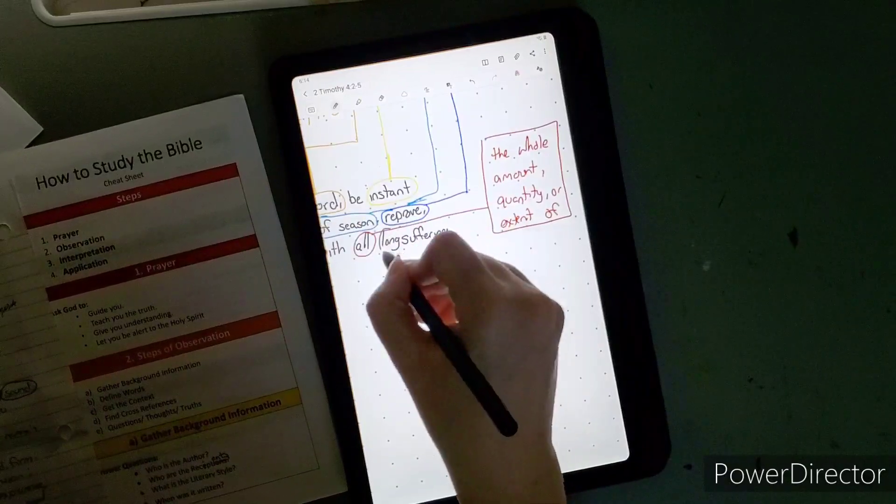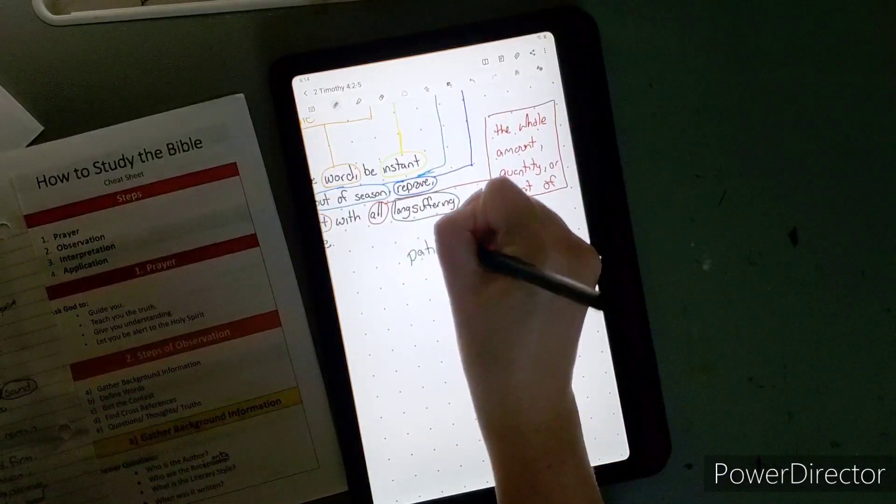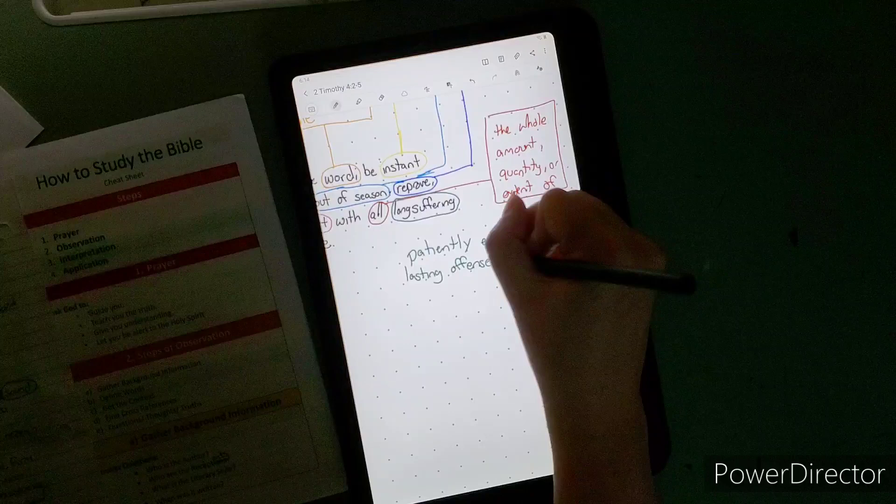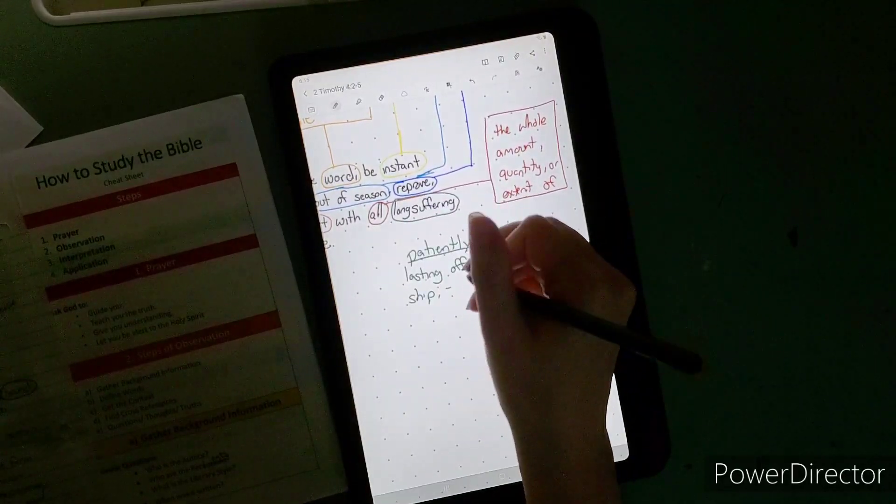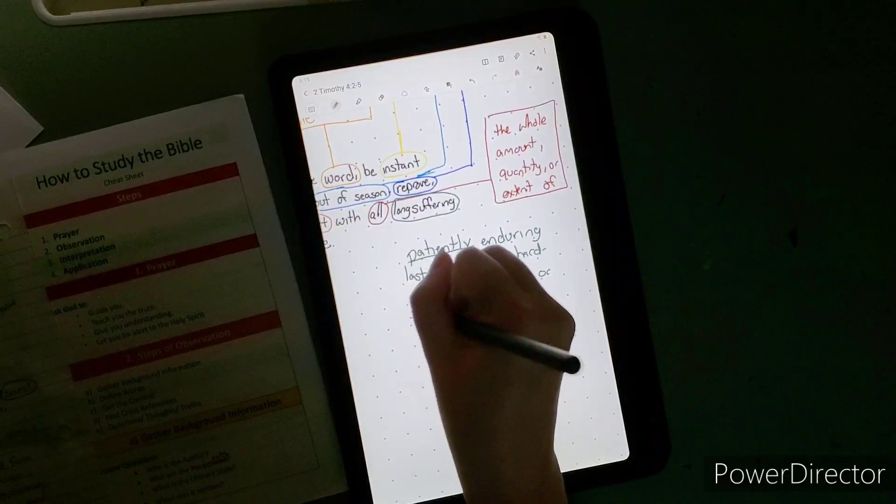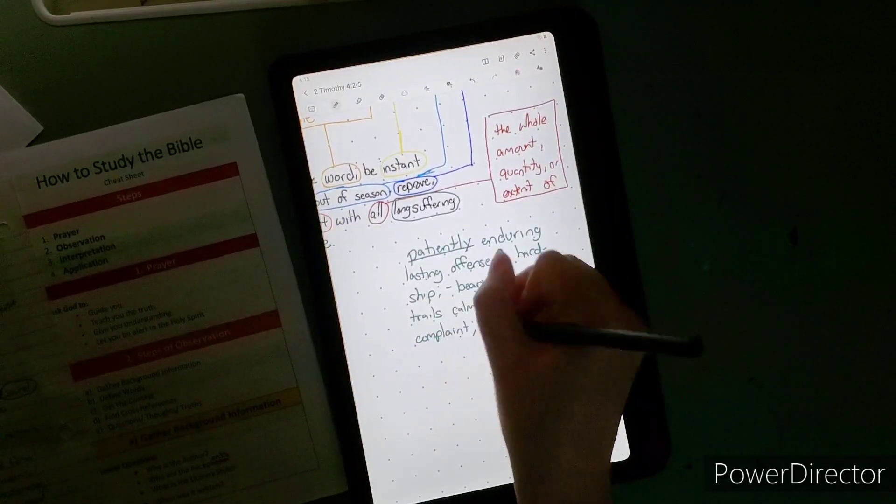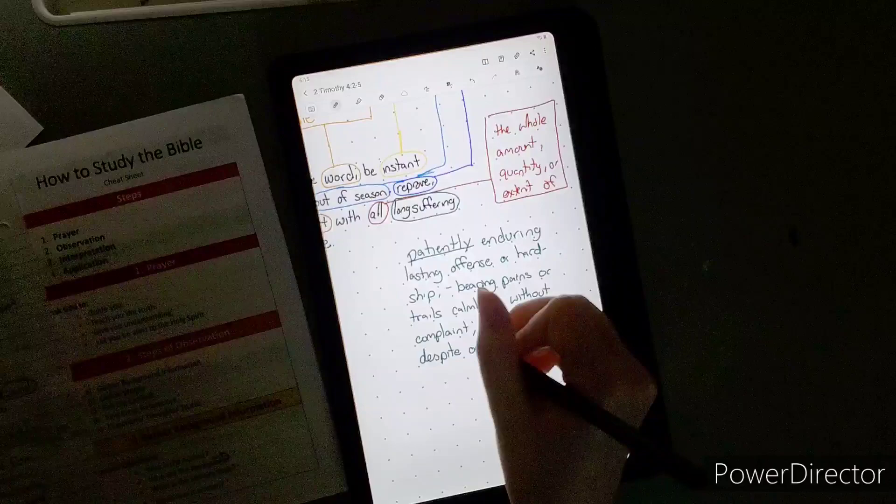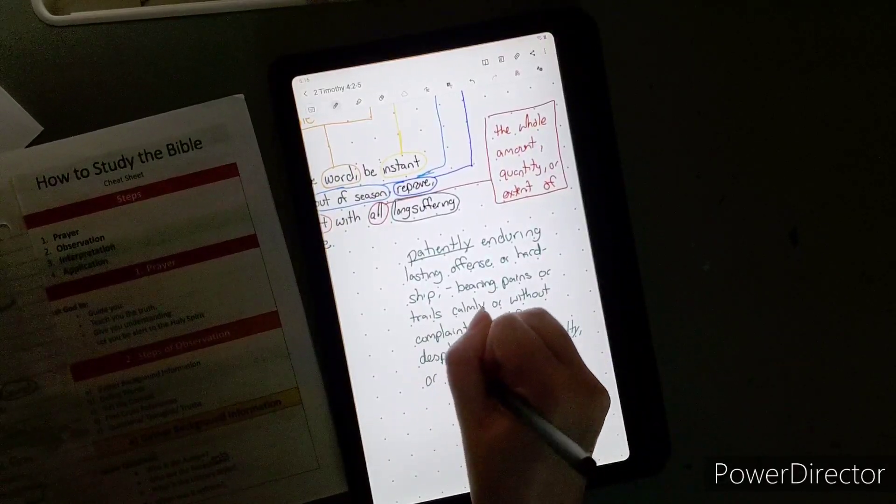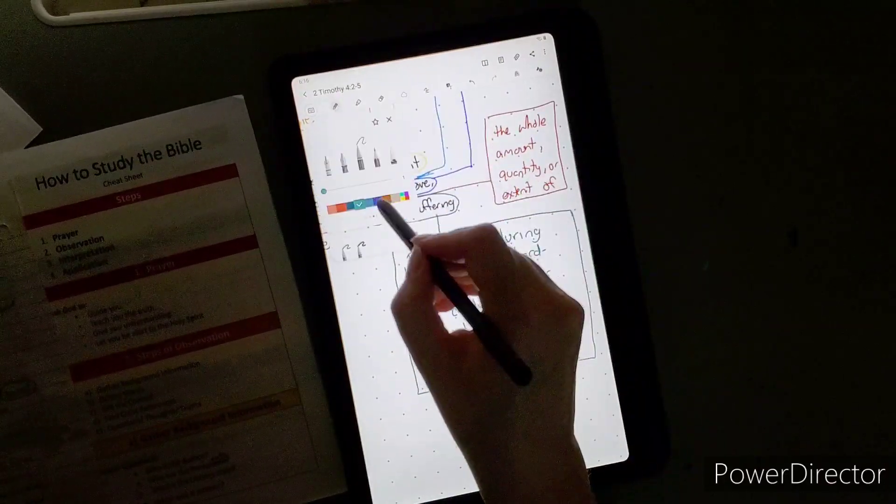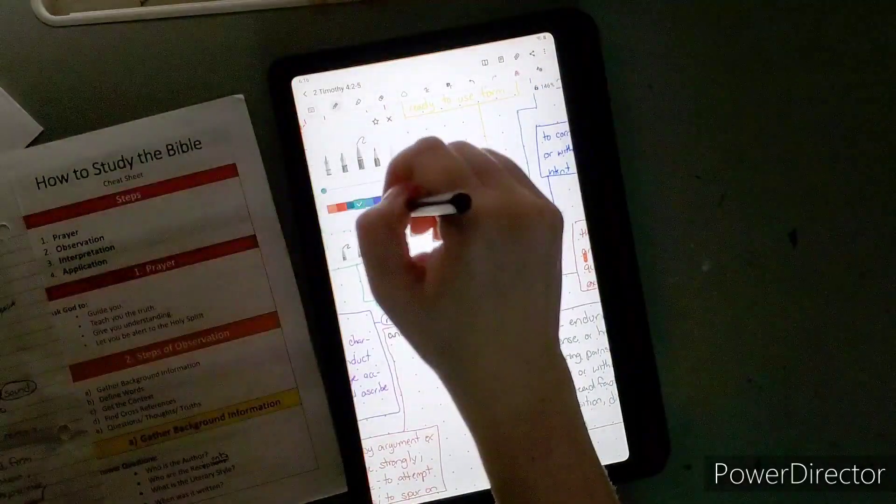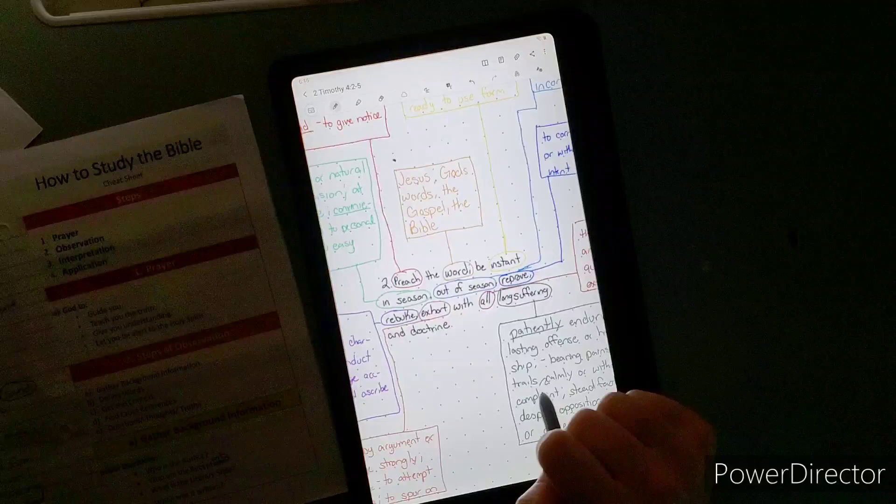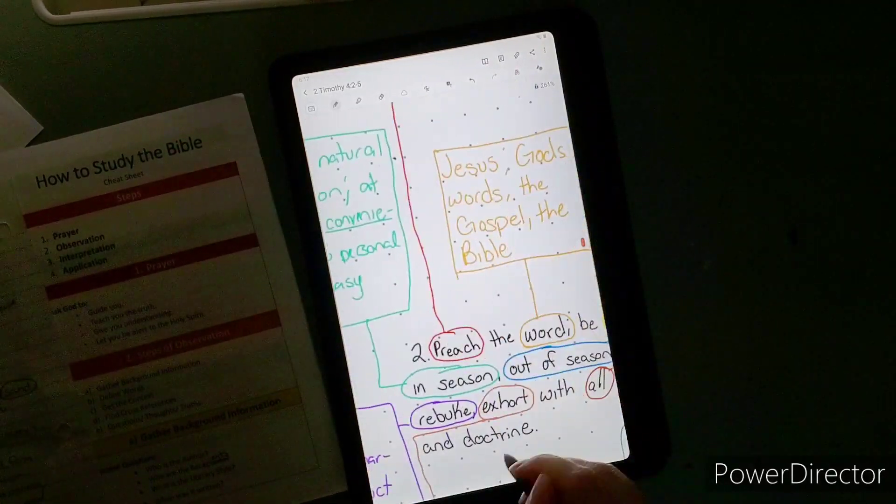In all long suffering. All is the whole amount, quantity or extent of long suffering is patiently enduring lasting offense or hardship. Patient is bearing pains or trials calmly or without complaint, steadfast despite opposition, difficulty, or adversity. So it's not going to be easy. This preaching thing, you can preach through your life but definitely use your words as well. It's a lifelong thing. You're going to be preaching because you want to see people saved and yeah it's going to be hard.